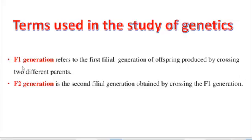F1 generation is the first filial generation, which refers to the first generation of offspring produced by crossing two different parents. If we then cross the F1 generation offspring again, the resulting offspring are called the F2 generation — the second filial generation obtained by crossing the F1 generation.